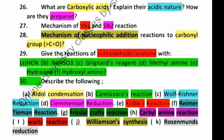Next are these named reactions which are important: aldol condensation including cross aldol condensation, Cannizzaro's reaction including cross Cannizzaro, Wolf-Kishner reduction, Clemmensen reduction, Kolbe reaction, Reimer-Tiemann reaction, Friedel-Crafts reaction, carbylamine reaction, Wurtz reaction, Williamson synthesis, and Rosenmund's reduction. This is very important, definitely a question will be asked.